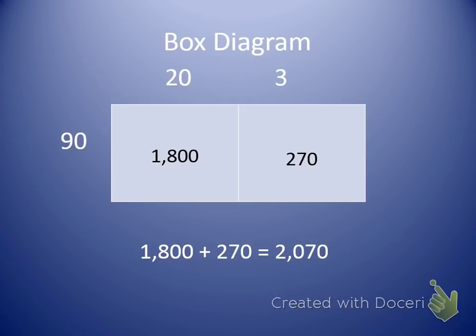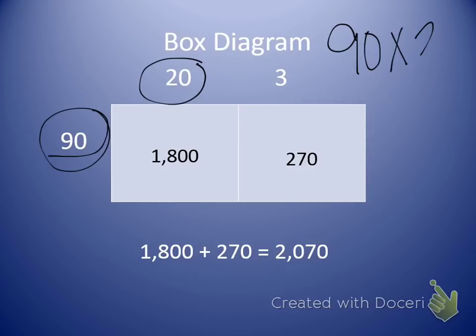Your box diagram for this problem will look like this. We know how to multiply with multiples of 10 because we've already worked on that in past units. So I'm going to start with my first box right here. I have a 90 times my 20. Remember that my original problem was 90 times 23. So 23 was broken apart into 20 and 3 to give me these two numbers right here.